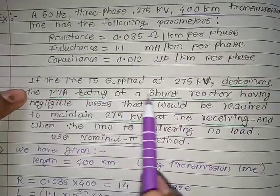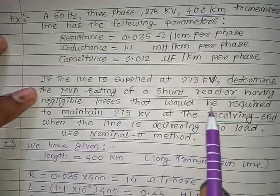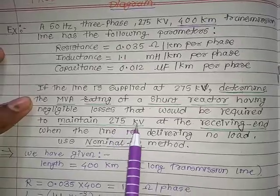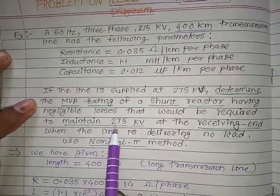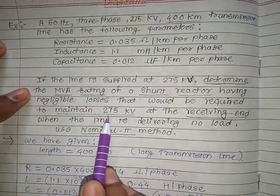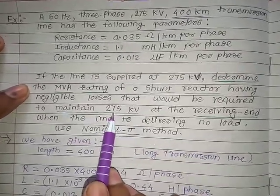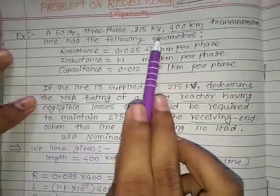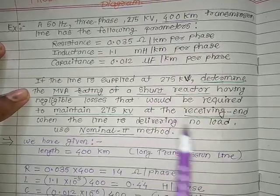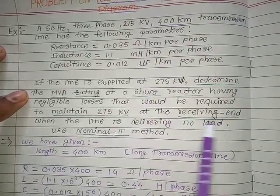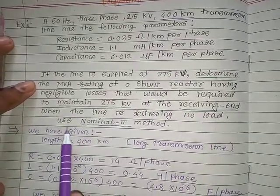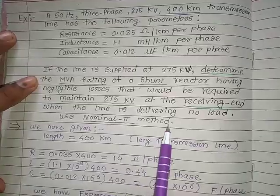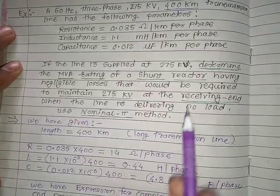The line is supported at 275 kV. We need to determine the MVA rating of a shunt reactor having negligible losses, required to maintain 275 kV at both the sending end and receiving end when the line delivers no load. We will use the nominal pi method here.